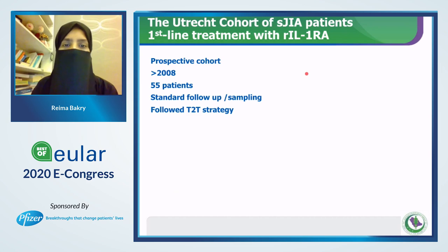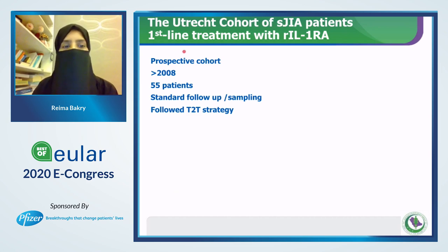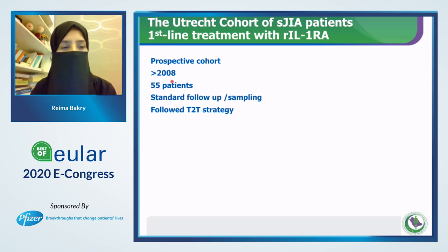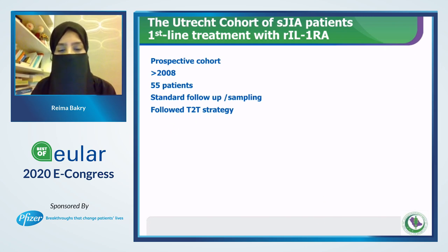Another cohort study of systemic JIA patients started treatment as monotherapy with anakinra. They had a prospective cohort that started in 2008 with 55 patients, all receiving standard follow-up, standard sampling, and following the treat-to-target strategy.